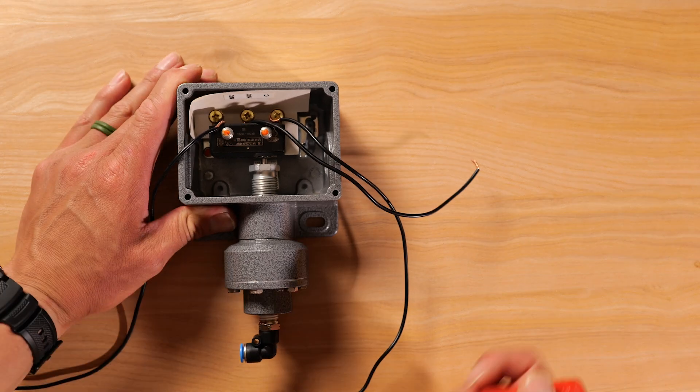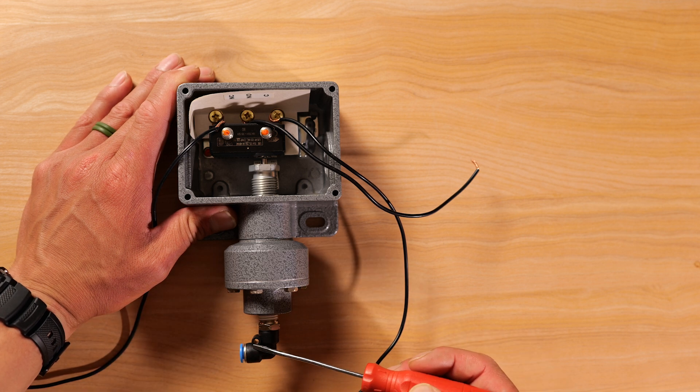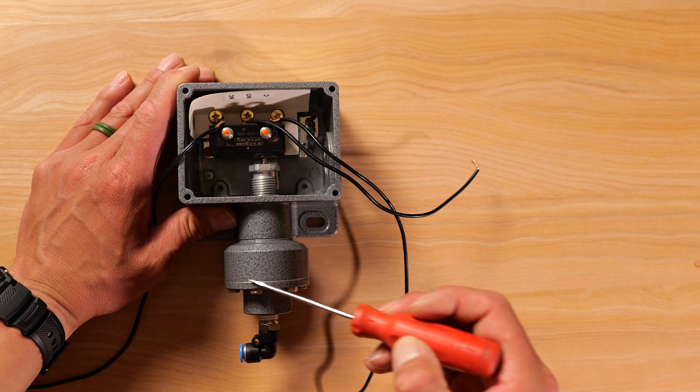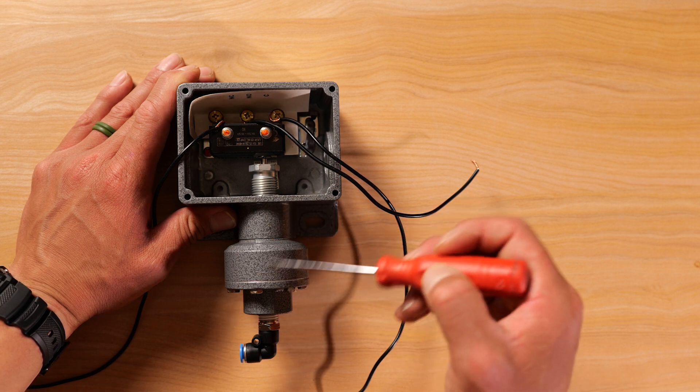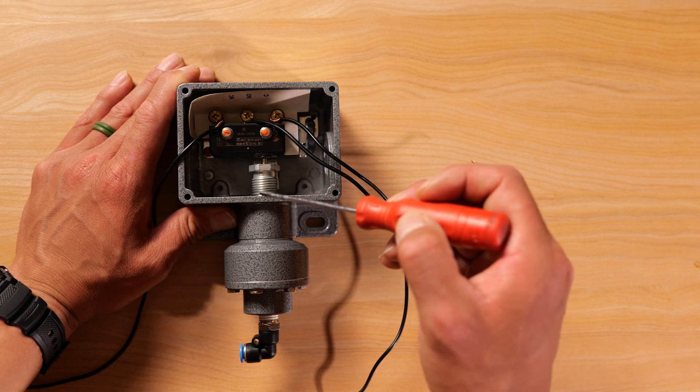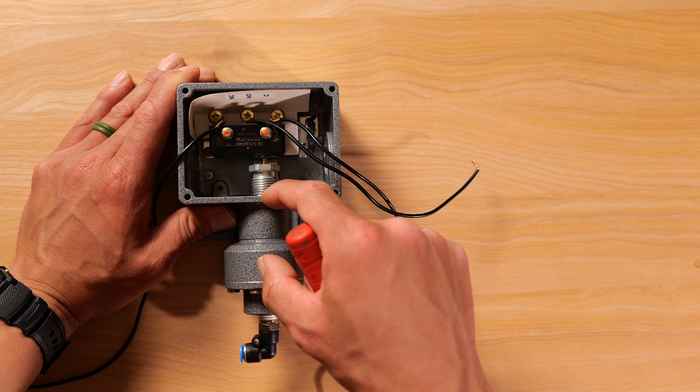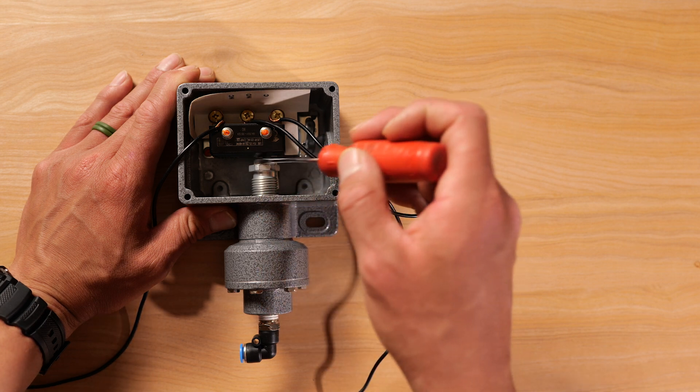All right, so here we have a mechanical pressure switch. Through here you have your process connection. You'll have a diaphragm about right here. You'll have a spring, your range spring here, and the range spring will be adjusted depending on the adjustment screw.